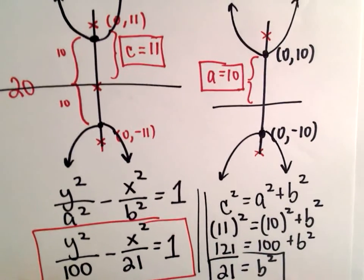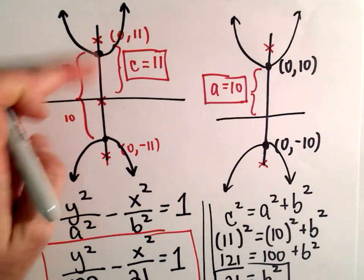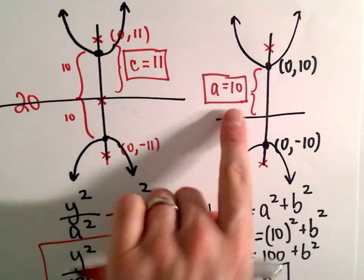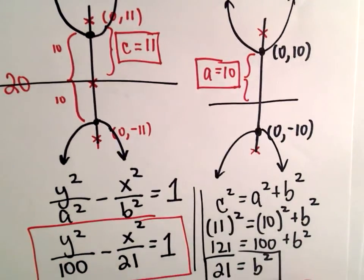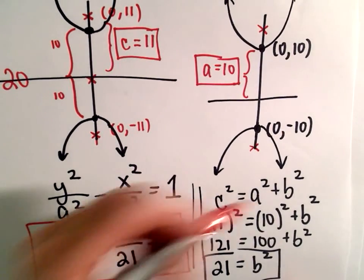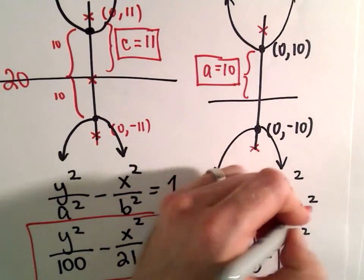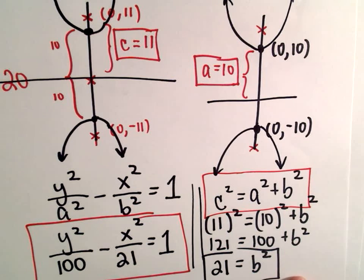So we get our c value for free. That's the distance to the foci. a, we just have to think about half the length of this transverse axis. And the last thing is we need our value for b. And we just simply use this equation, c² = a² + b², to help us get that.